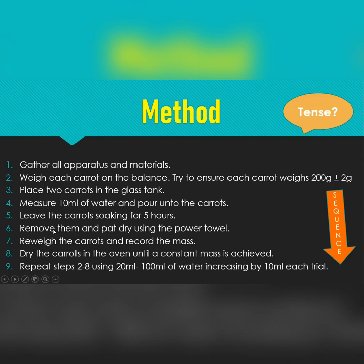Repeat steps two to eight using 20 ml to 100 ml of water, increasing by 10 ml each time — so you go from 10 ml to 20 ml to 30 ml and so on, soaking each for five hours. You don't need to wait for each to finish; with enough apparatus you can set all of them up at once, so when the five hours is over everything is done.